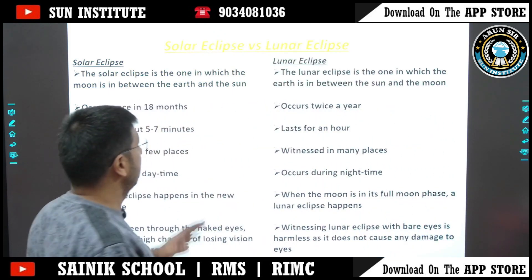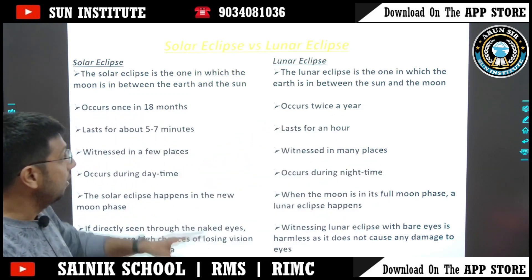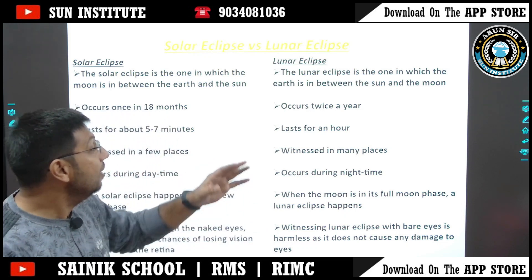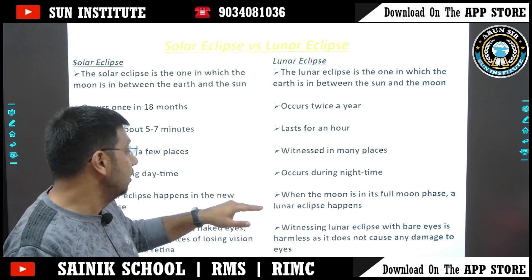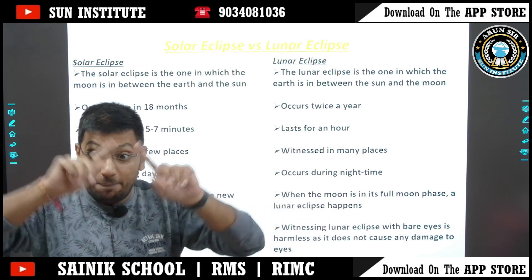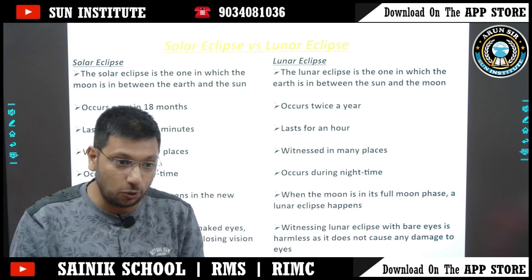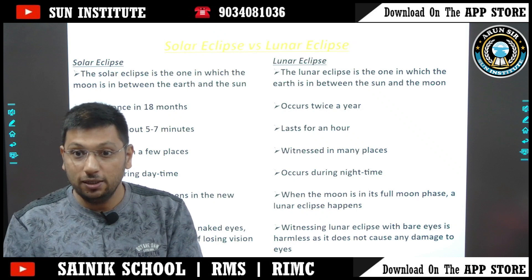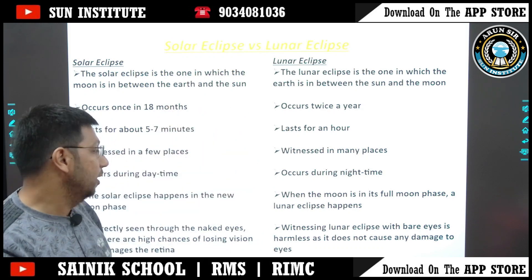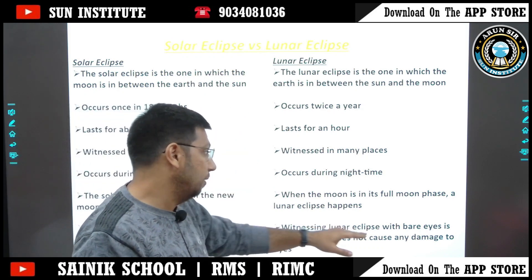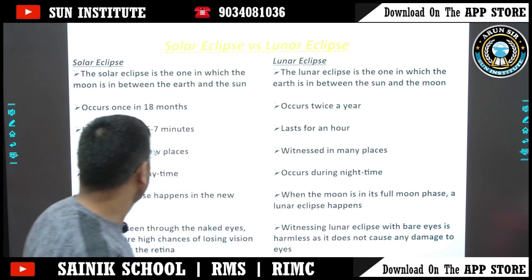Next is lunar eclipse. The lunar eclipse is one in which the Earth is between the Sun and the Moon. It occurs twice a year, lasts for about one hour, is witnessed in many places, and occurs during nighttime. A lunar eclipse happens when the Moon is in its full moon phase. All these eclipses relate to the planetary motions we have studied, like tides, solstice, equinox, and moon phases. Witnessing a lunar eclipse with bare eyes is harmless and does not cause any damage to the eyes.